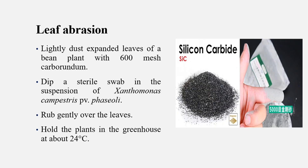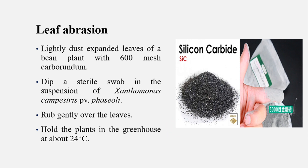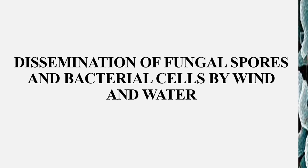The last method is leaf abrasion. We use mesh carborundum, which is silicon carbide, as an abrasive for cutting and gliding on the leaves. We then take a sterilized swab, dip it in the Xanthomonas compestris suspension, and rub it on the leaves. We put the plant in the greenhouse at 24 degrees Celsius and observe symptoms in two weeks.